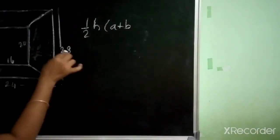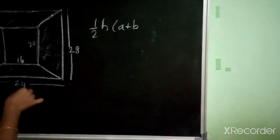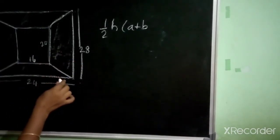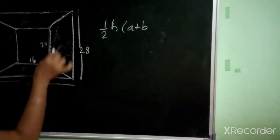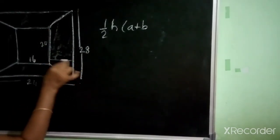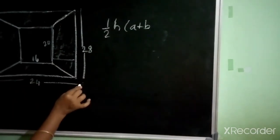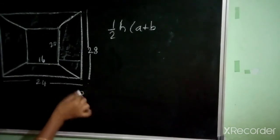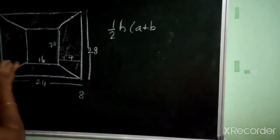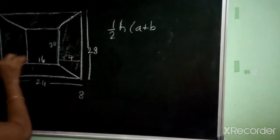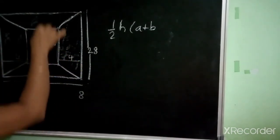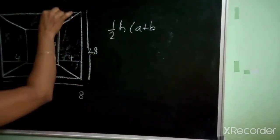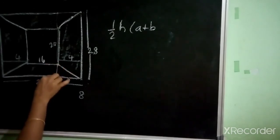For the top and bottom trapezoids, a is 20, b is 28. For the side trapezoids, a is 16, b is 24. The full height difference is 24 minus 16 equals 8 cm. Since this is divided equally on both sides, the height is 4 cm.